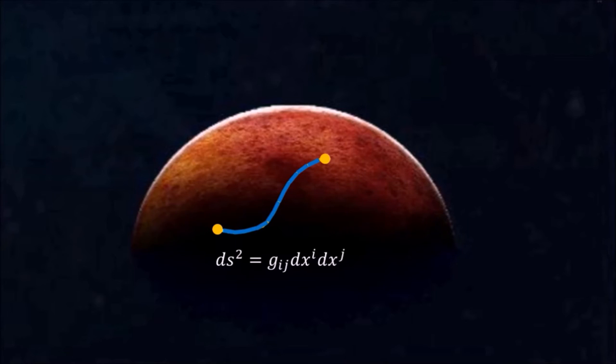Every path we choose will give us a specific s. We could say that s is a function of the path. Clearly, some paths give larger s than others, and one of the paths, the geodesic, will give the smallest s. So how do we go about finding it?